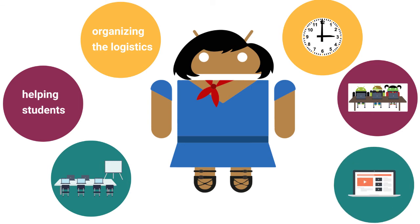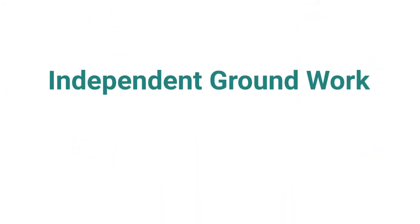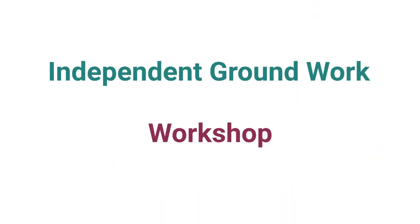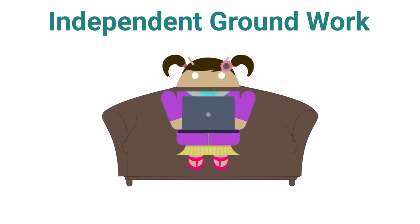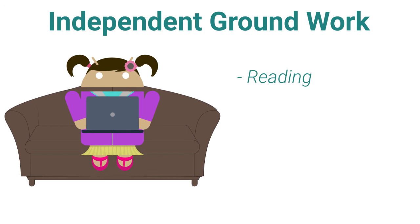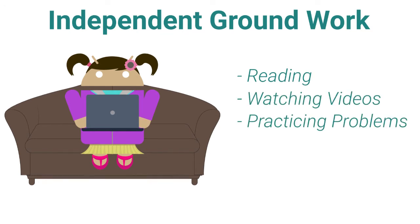Applied CS units have two parts: the independent groundwork and the workshop. Groundwork is completed by student participants in their own time and is important review and preparation for the workshop. Groundwork consists of reading, watching videos, and occasionally practicing problems.